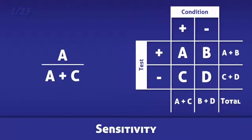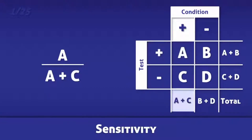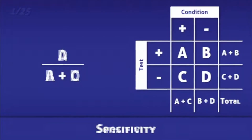Sensitivity is the ability of a test to identify individuals with a condition or a disease. It is calculated by dividing the number of true positives by the total number of people with the condition.